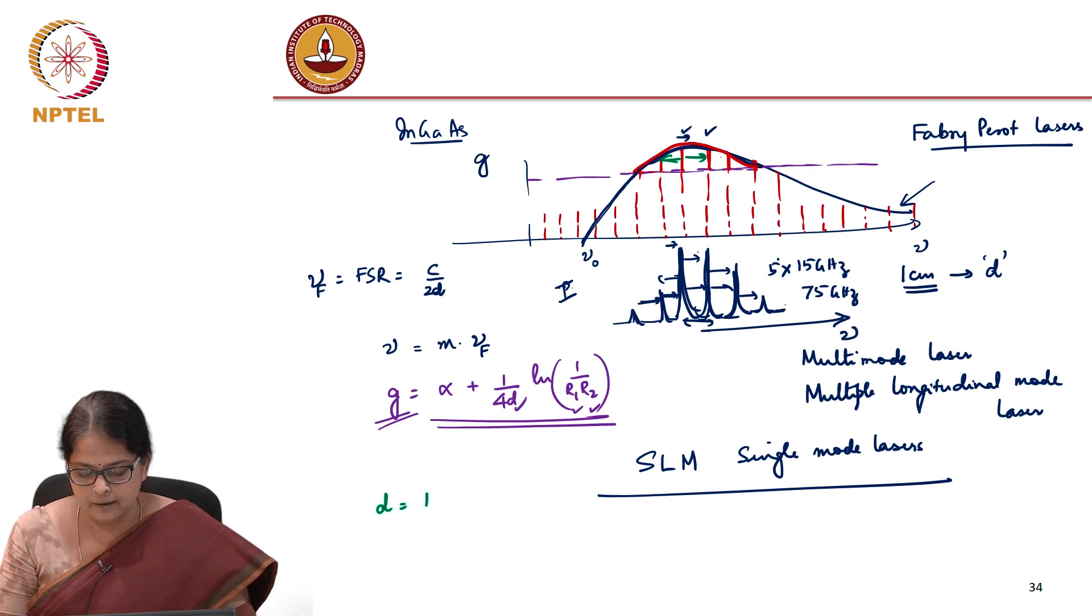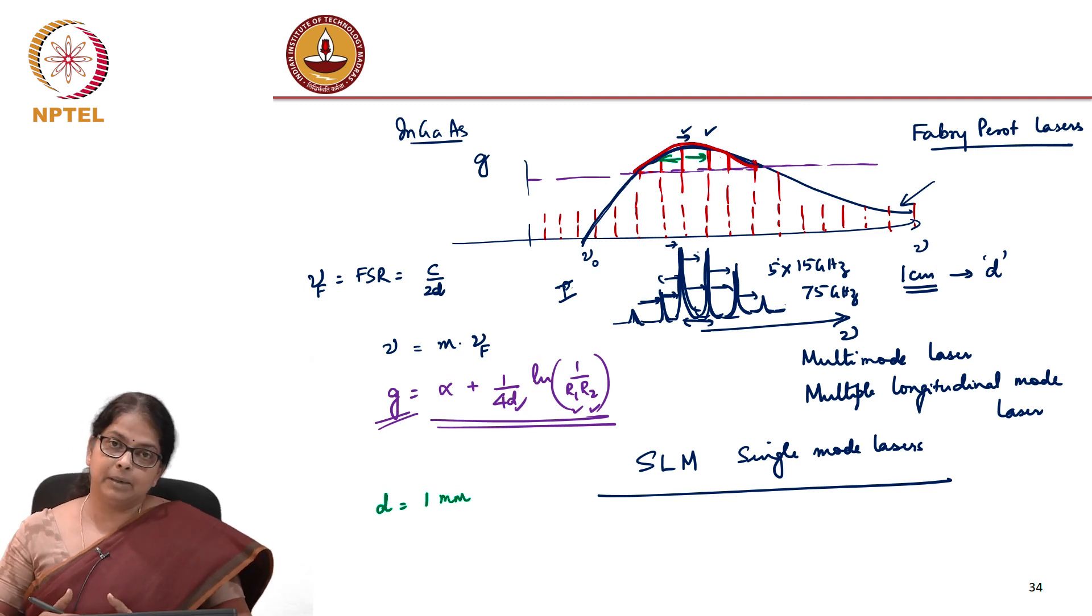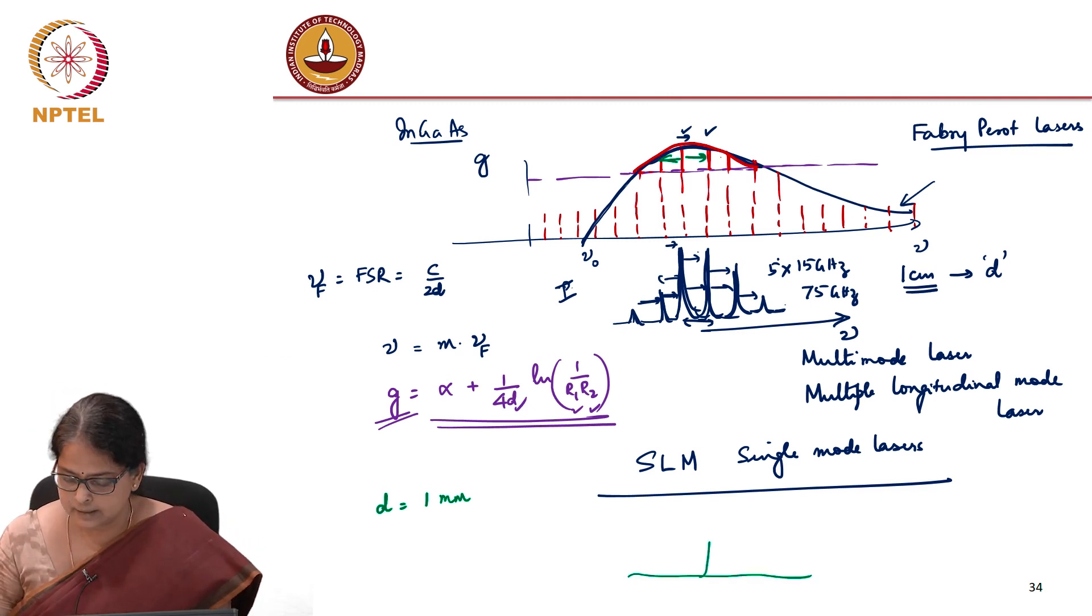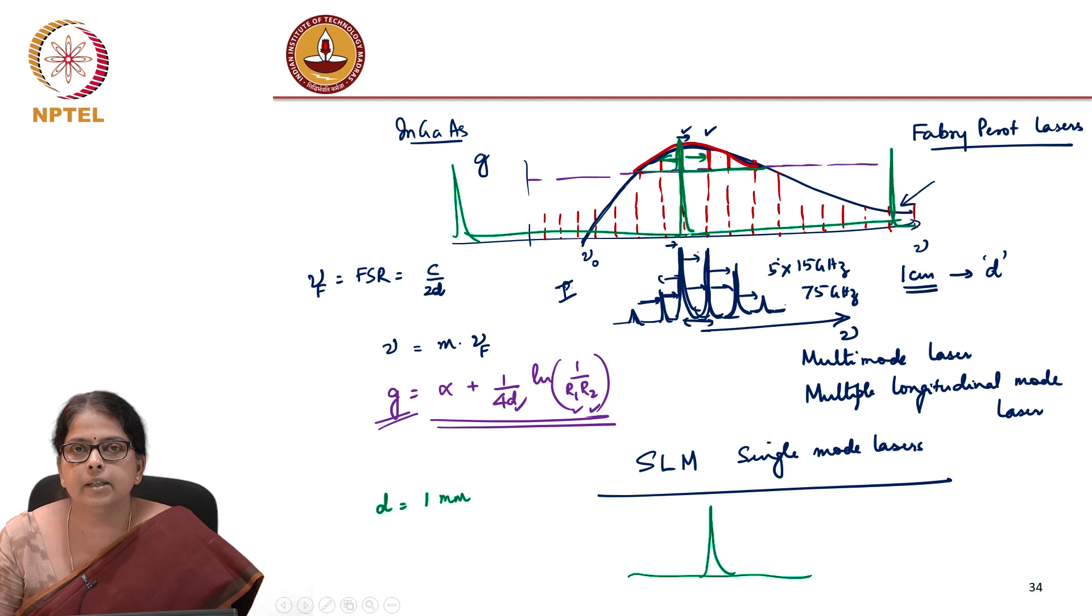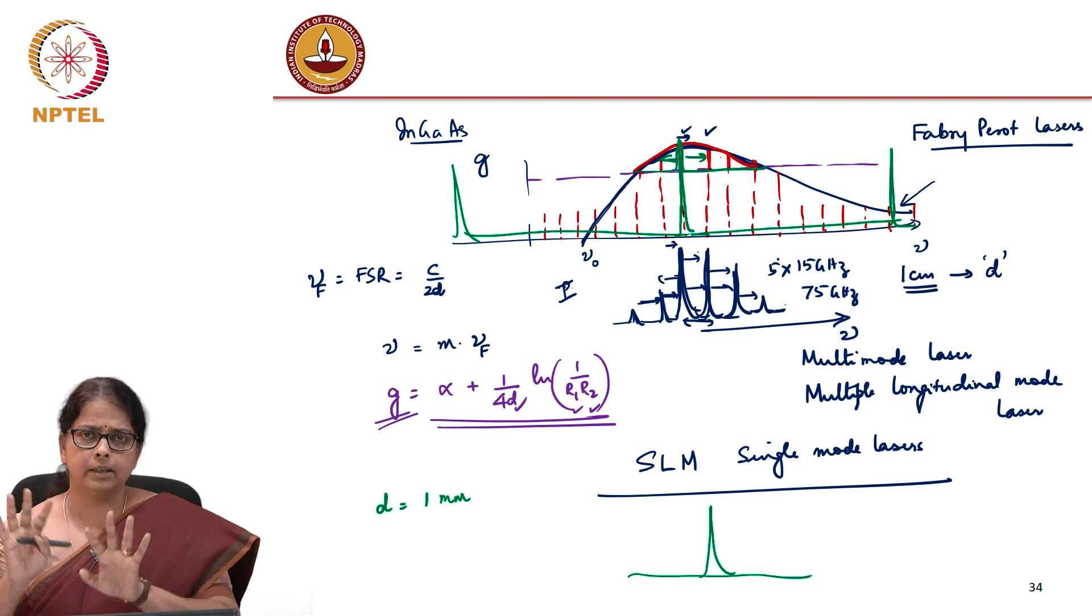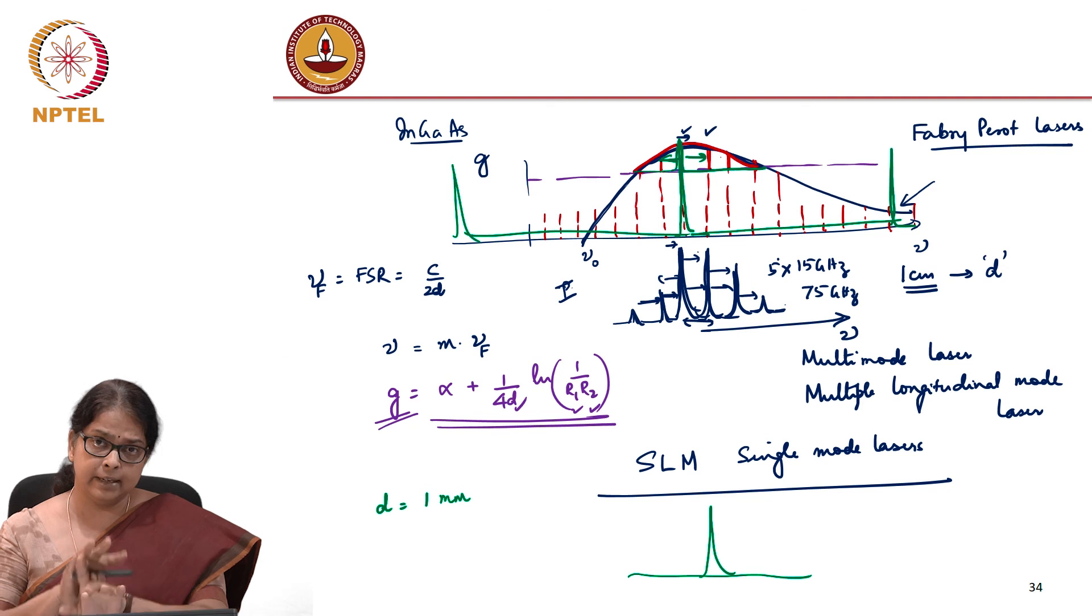For instance, if I choose instead of 1 centimeter, if I assume it is 1 millimeter, my d has reduced by 3 orders of magnitude, my FSR will increase by 3 orders of magnitude. So that is how you would make a single longitudinal mode laser. You make sure that you could have one longitudinal mode here and the next longitudinal mode should appear way outside in your gain spectrum. Then it is only this mode that gets supported by the fiber and then you have a SLM. That is how you would convert a multiple longitudinal mode laser to a single longitudinal mode laser in a Fabry-Perot cavity.